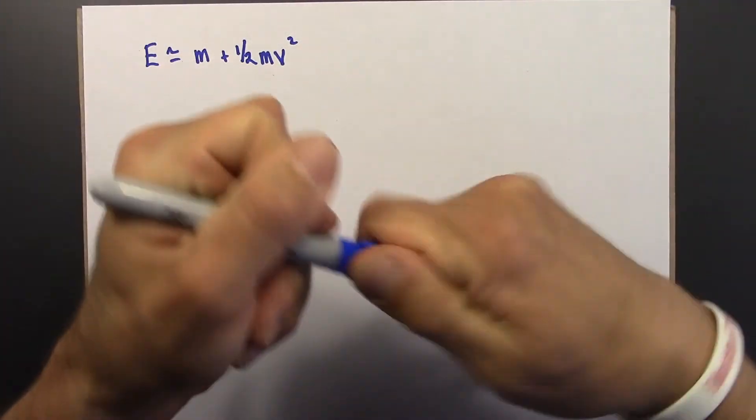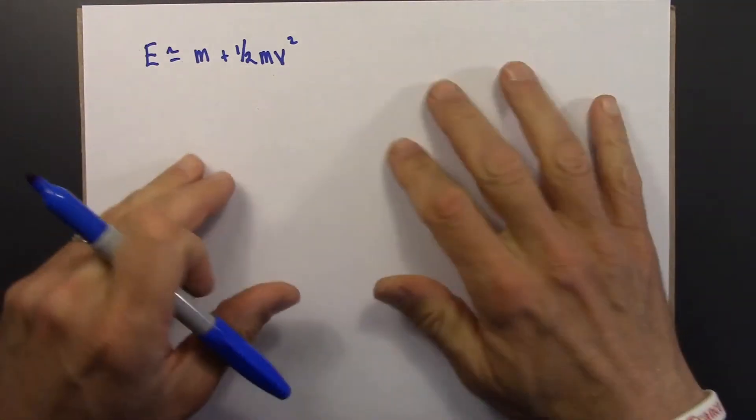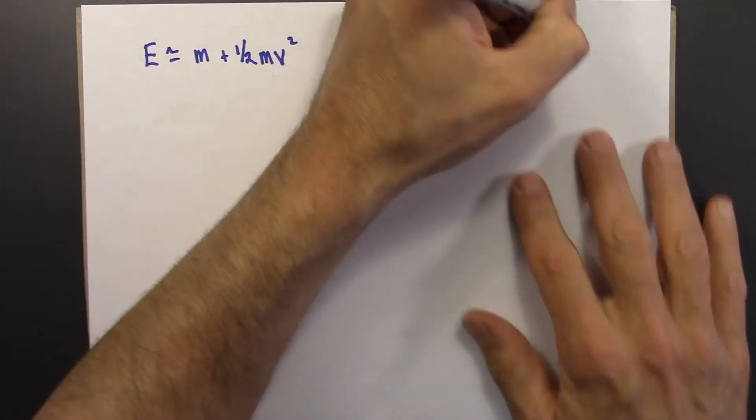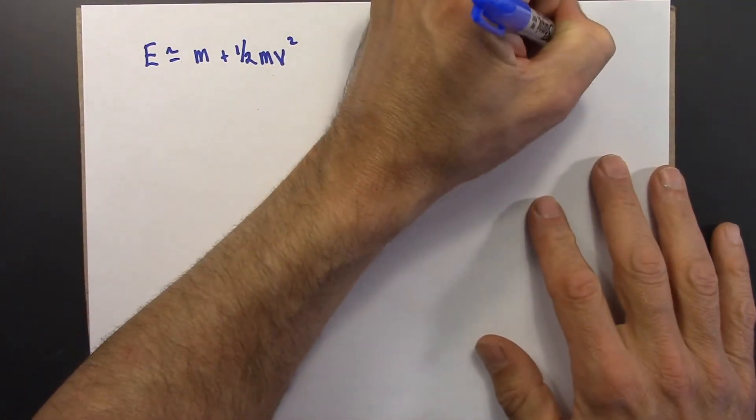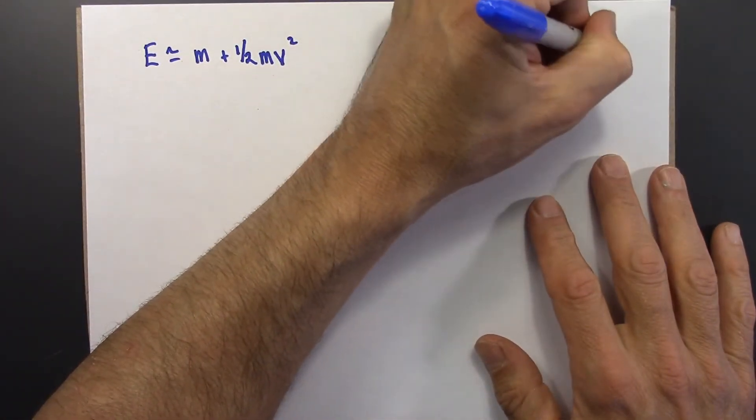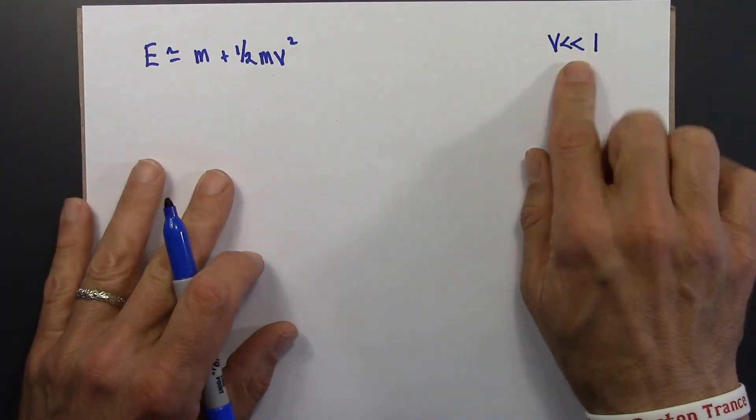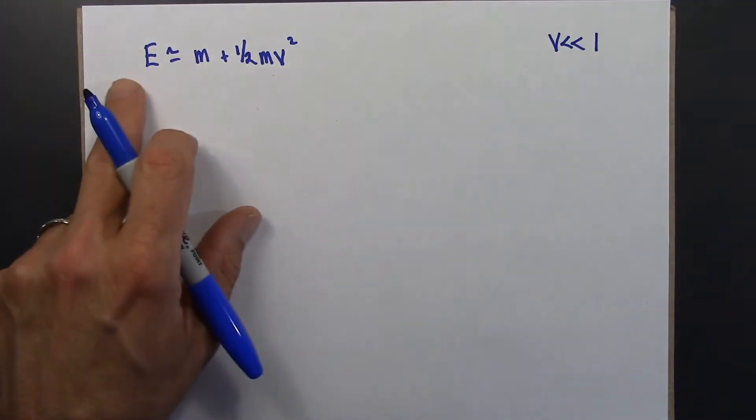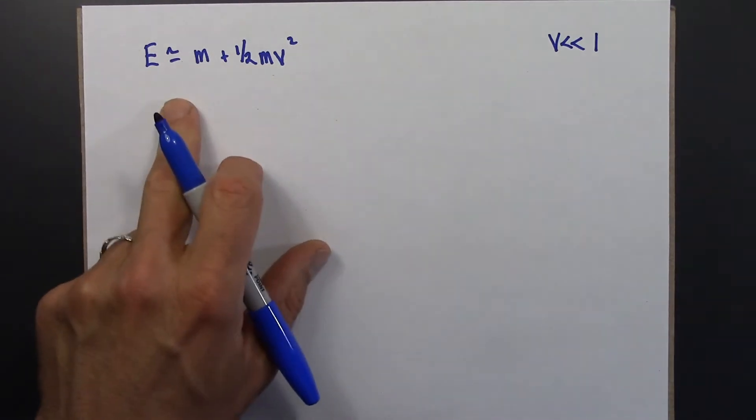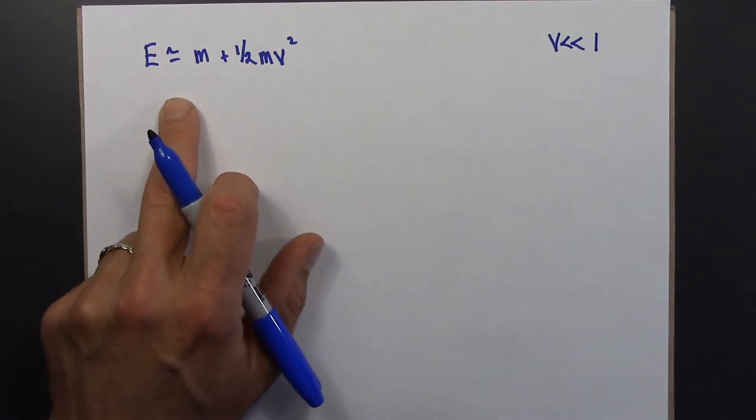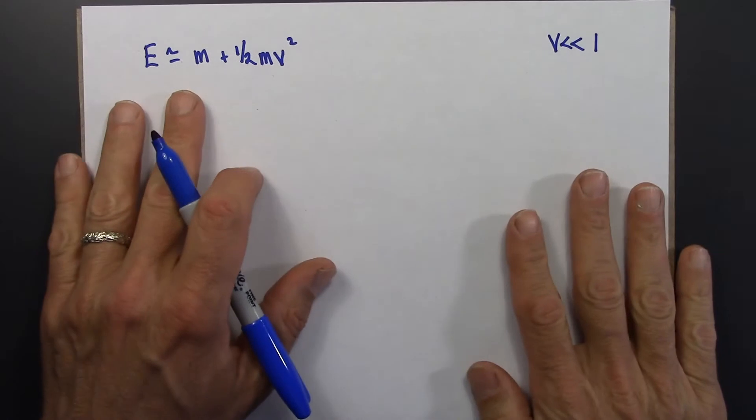So here's this equation, and let's see, a reminder, I'll put that over here I guess, that this is true only if v is much less than 1. Alright, so this equation is in SR units, and we've been working in SR units just about the entire course.